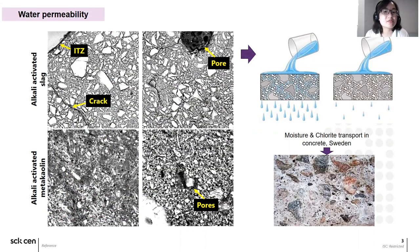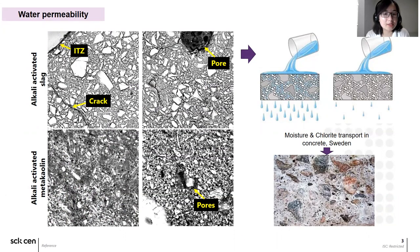AAM supports materials including pores, cracks, and interfacial transition zones, ITZs, which are similar to the microstructure of OPC. AAM may be attacked by substances when exposed in the working environment, and transport properties including diffusivity and water permeability — as microstructural properties of materials — determine how fast these substances penetrate into the AAM. Here I will focus more on the water permeability of these materials, which determines penetration under a pressure gradient, and this transport will cause degradation of concrete practically.